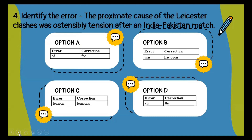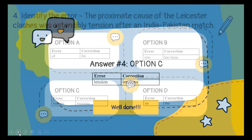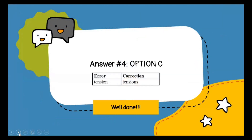Moving on to the fourth type of question: identify the error. You have a sentence given and you have to pick up the error and find the correct word. The sentence is: 'The proximate cause of the Leicester clashes was ostensibly tension after an India-Pakistan match.' The error is the word tension — it should be tensions. So the correct option is option C.